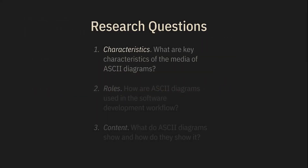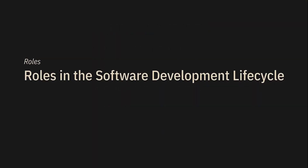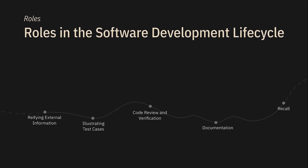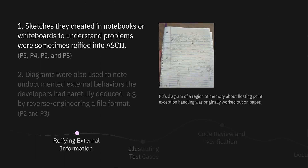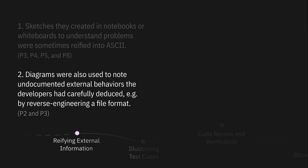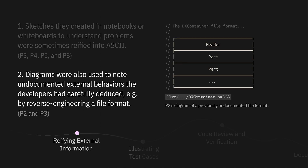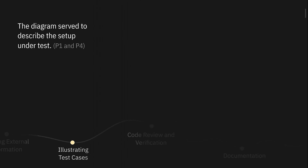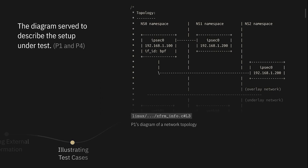We also found them being used in quite a few places in software development — for illustrating test cases, but also in code reviews and even commit messages. Sometimes these diagrams originated from outside: sketched in a notebook or on a whiteboard and later reified into ASCII. P3 shared a picture of their notebook, and some of those sketches eventually became an ASCII diagram. ASCII diagrams were also used to record previously undocumented information — P2 reverse engineered a file format using its hex dump and documented their findings as a diagram. P4's memory block diagrams and P1's network scenario diagram were both attached to test cases.